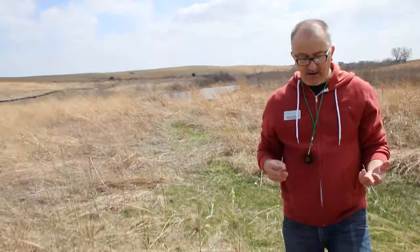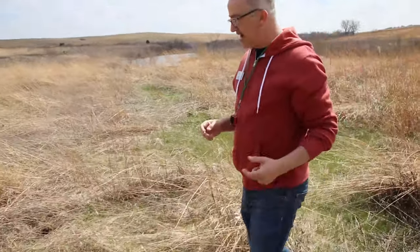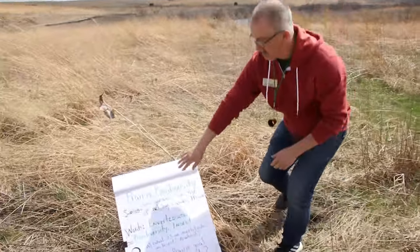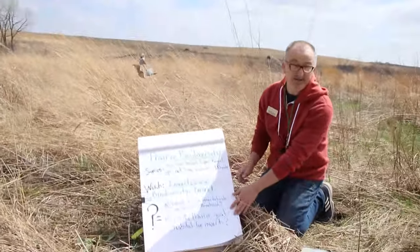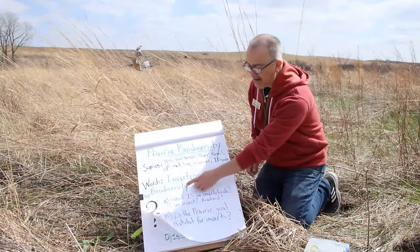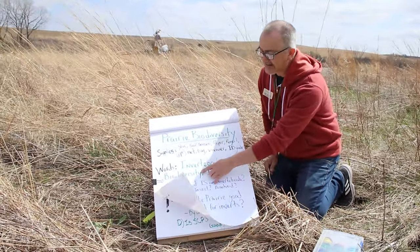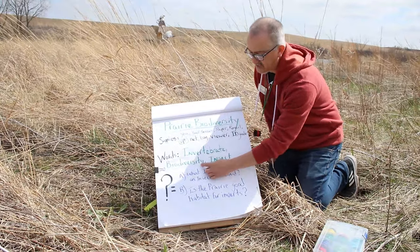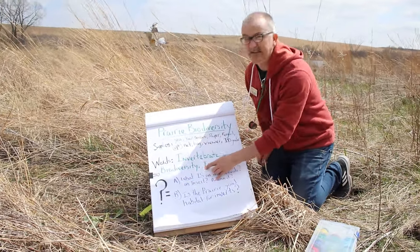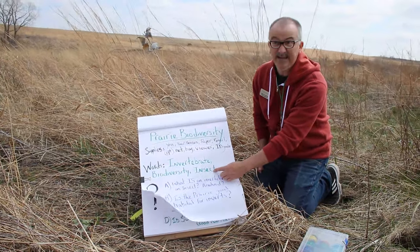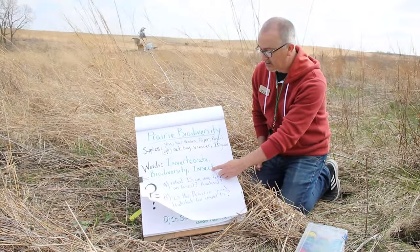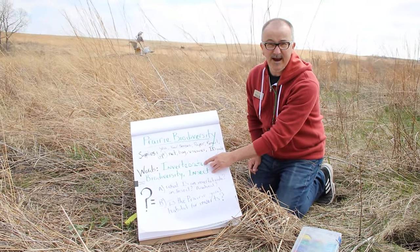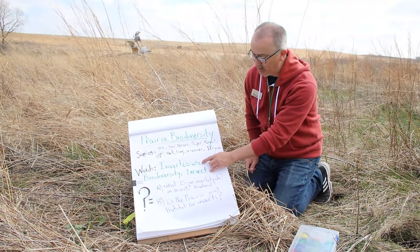We've seen lots of stuff living and growing and using the prairie. See if you can think about other things that might need it. Remember some of our big vocab words: biodiversity just means lots of life — diversity is lots of kinds and bio is life. Insect is one of those animals that's got six legs. And invertebrate — what doesn't an invertebrate have? No backbone.